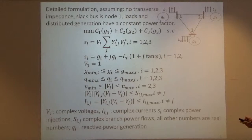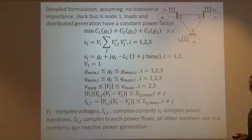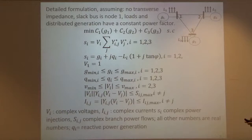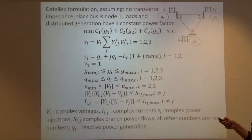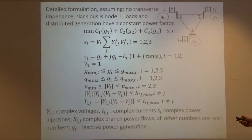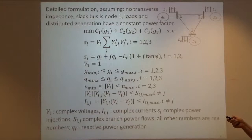You probably recognize the nodal power injection formulas that can be written using the admittance matrix. If I call Y the complex admittance matrix of this grid, then the injected power at node i is given by the complex voltage phasor at node i multiplied by the complex conjugate of the sum of Yij * Vj. The complex voltage is a variable in my optimization problem — it's the electrical state of the grid. From those complex numbers, we can derive all power flows, line currents, and all quantities of interest.